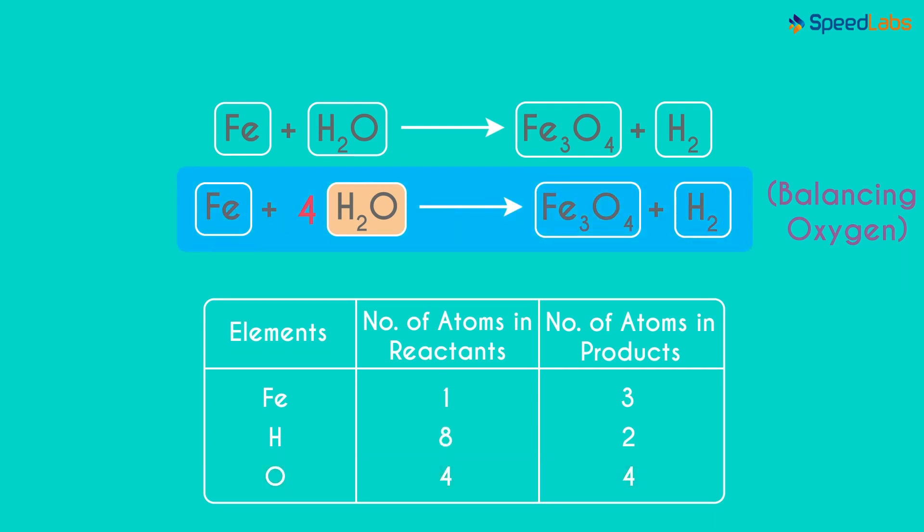This is a partly balanced chemical equation. But the Iron and Hydrogen atoms are not balanced now. When we multiplied this compound with 4, the number of Hydrogen atoms on the left became 8 and that on the right is still 2.